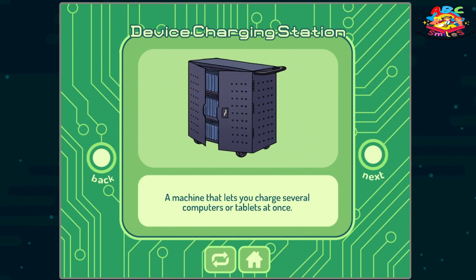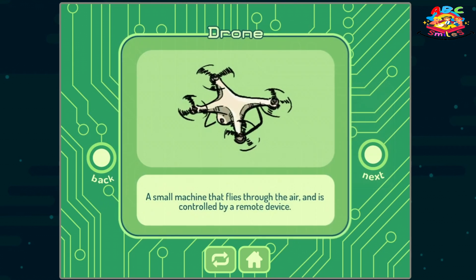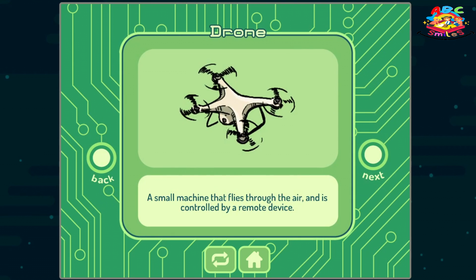Device charging station: a machine that lets you charge several computers or tablets at once. Drone: a small machine that flies through the air and is controlled by a remote device.